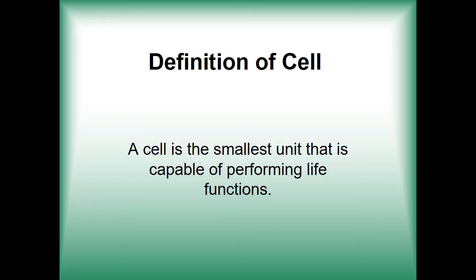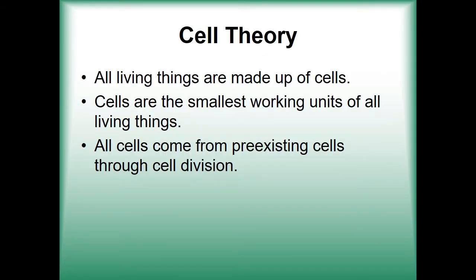This is the establishing tenet discussed in the cell theory. Alongside this, the cell theory has two more postulates: cells are the smallest working units of all living things, and all cells come from pre-existing cells through cell division. While most reference materials acknowledge three tenets in the cell theory, modern scientific literature adds three additional postulates.